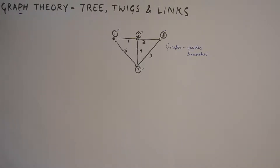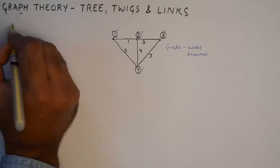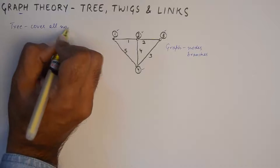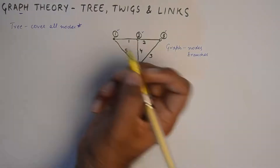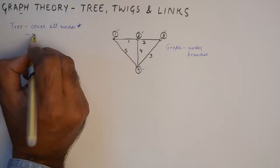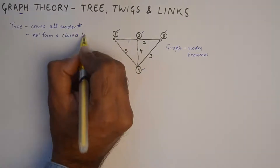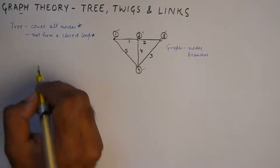Once we know what a graph is, we can proceed to find out the trees hidden within it — it's more of a riddle. A tree is an interconnected set of branches that includes all the nodes but does not form any closed loop. So what we need to figure out is: point one, a tree should cover all nodes, and point two, it should not form a closed loop.